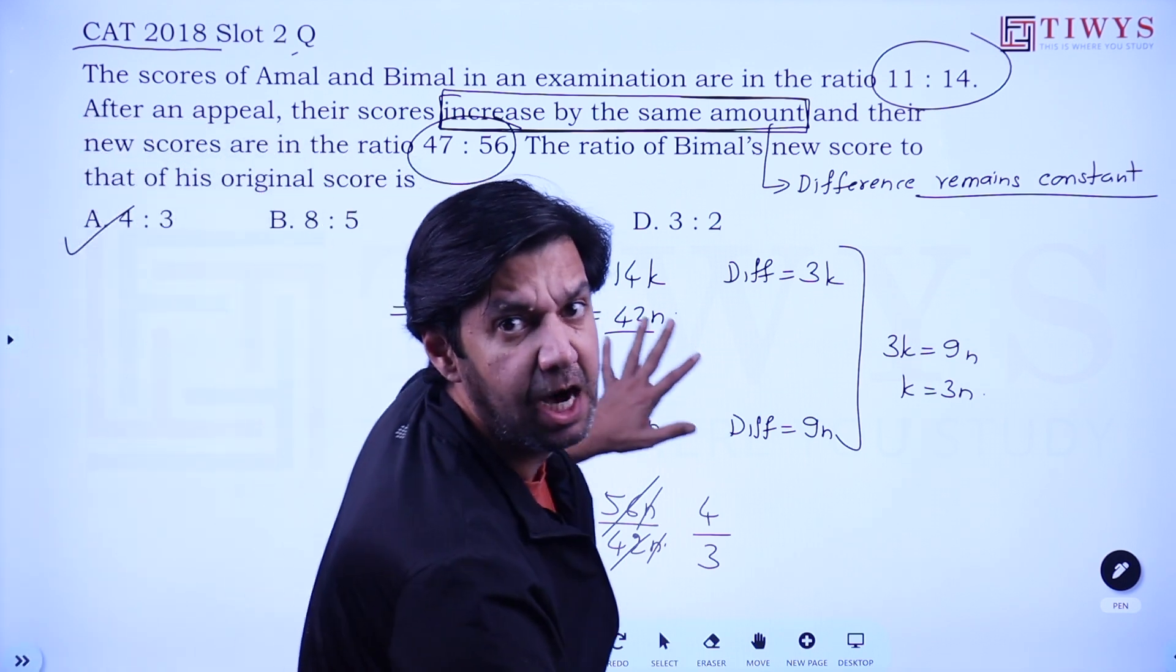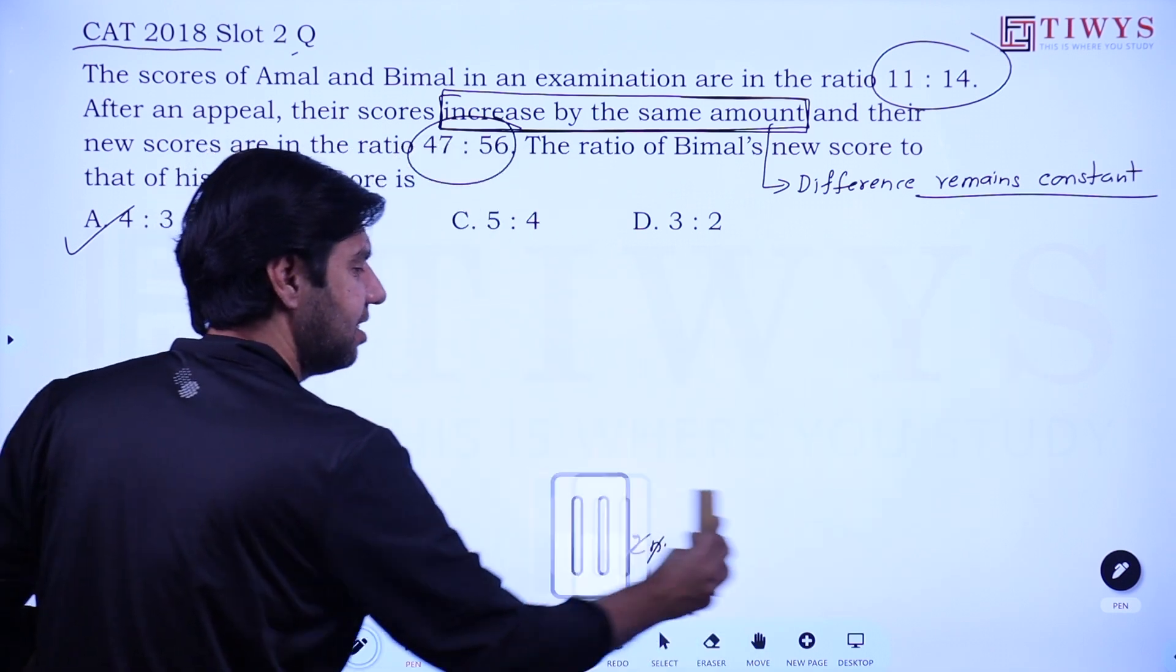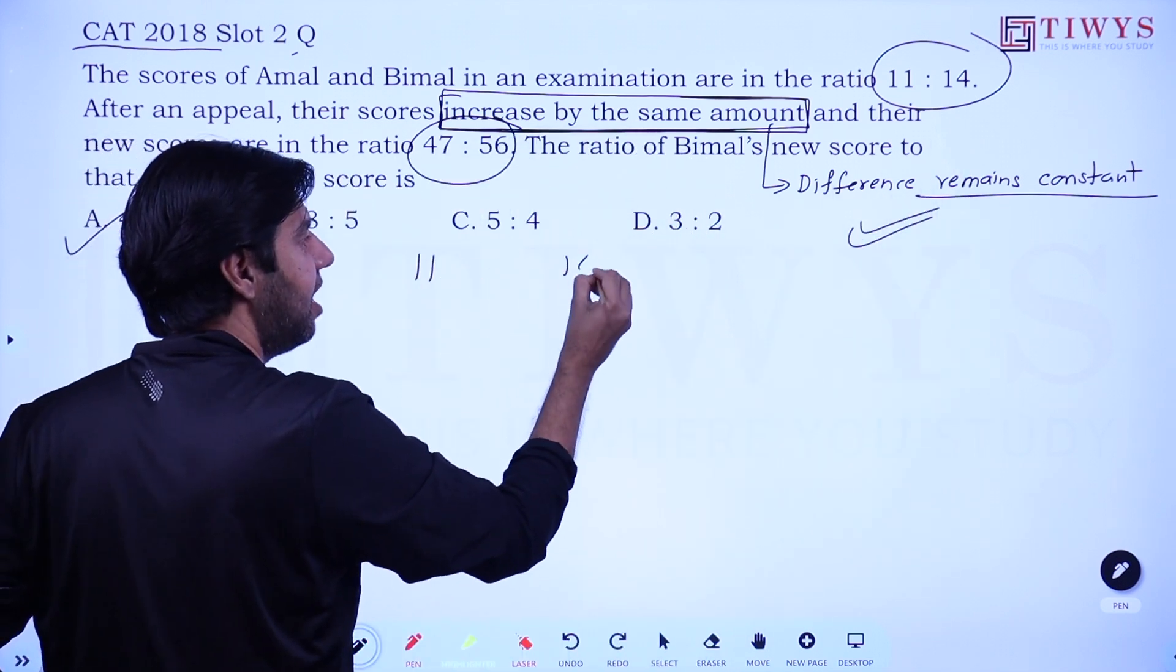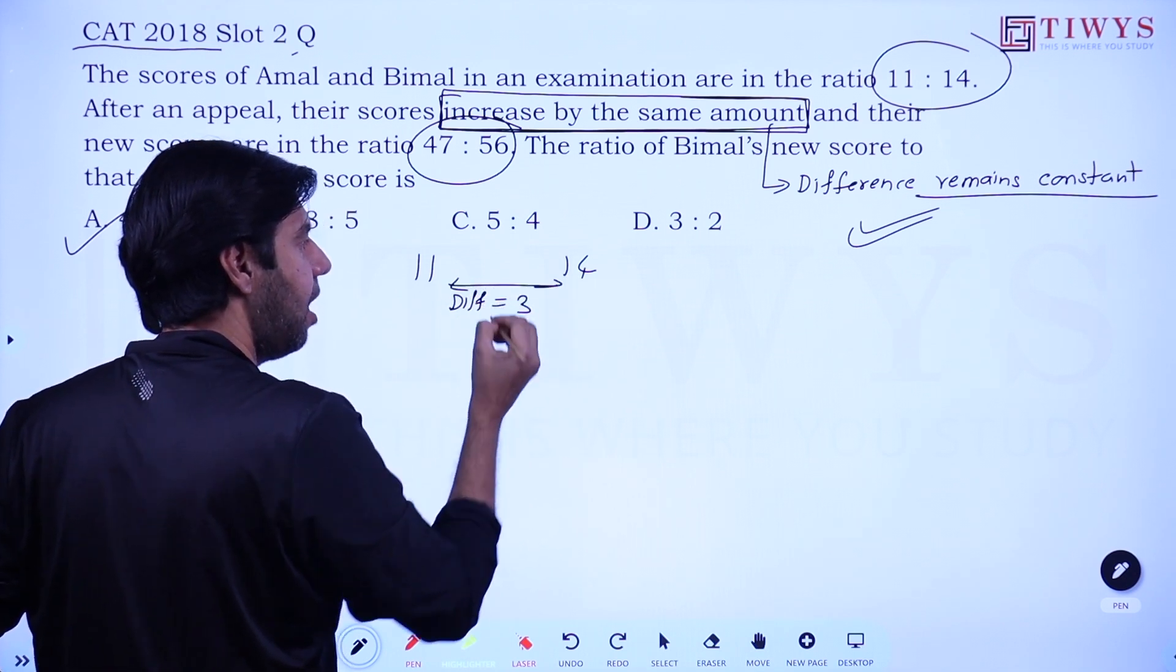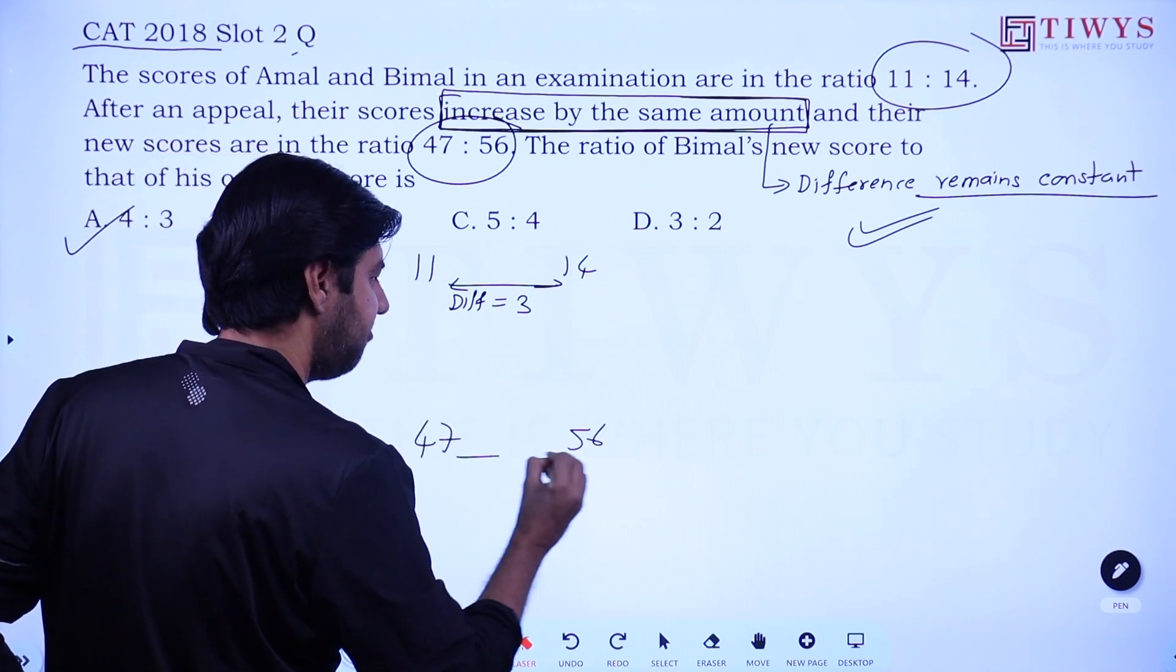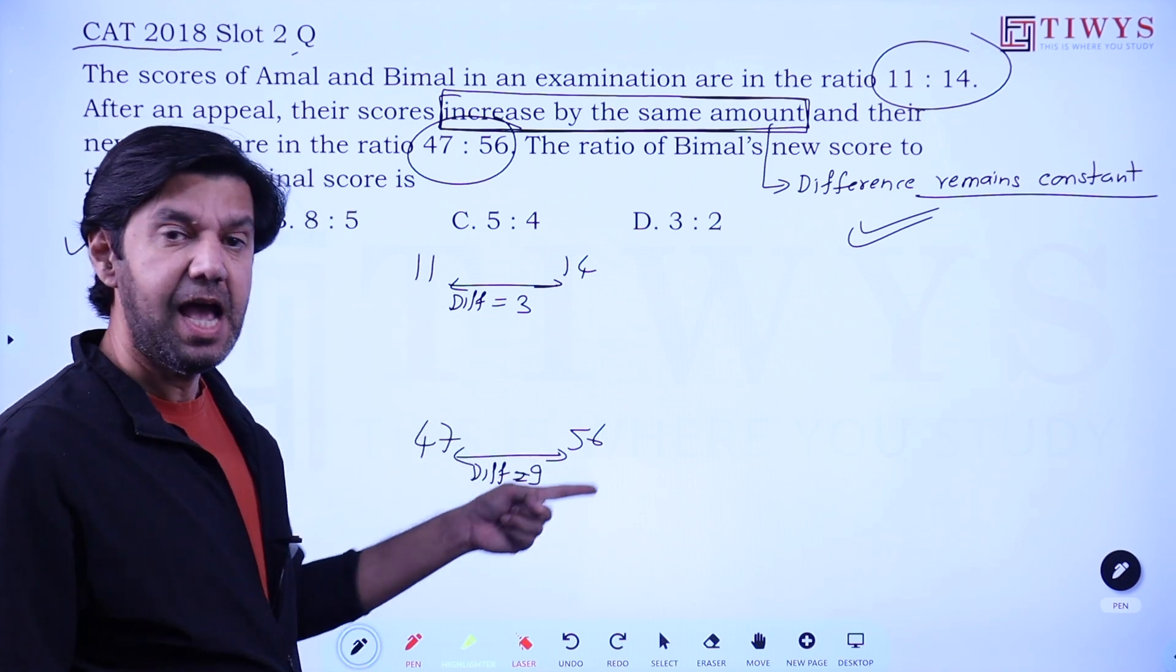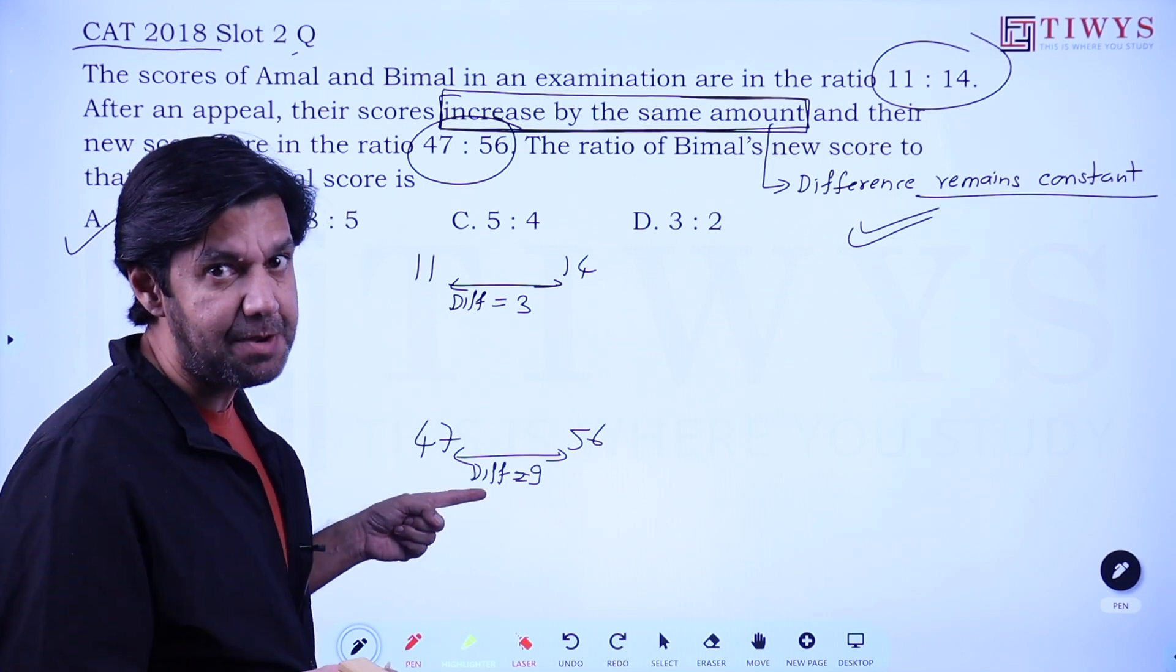Even now, getting this k and n is very childish work, students. If you are very adept at this, once this is realized, you could easily say: 11 and 14, the difference between 11 and 14 is 3, whereas in the second case 47 and 56, the difference is 9. I need to make the difference same. You could divide this by 3 and make the difference 3. The difference becomes same. Even that will give us the same answer.